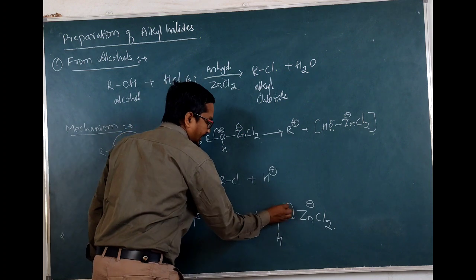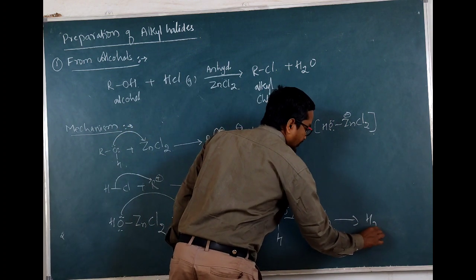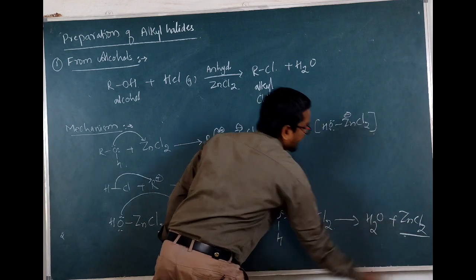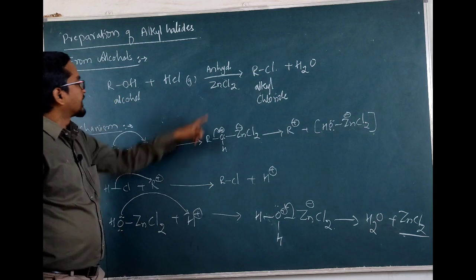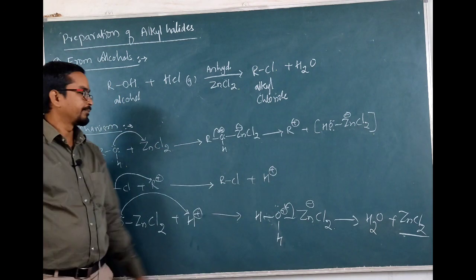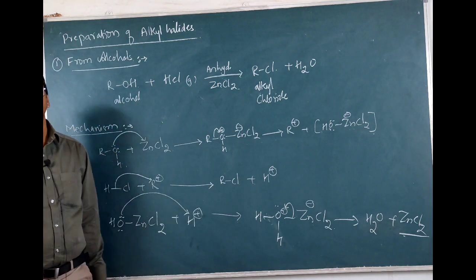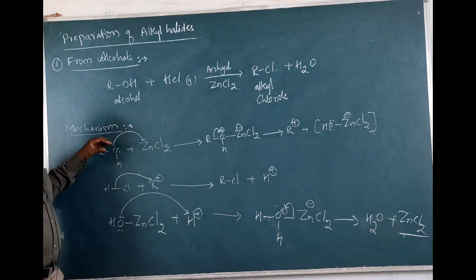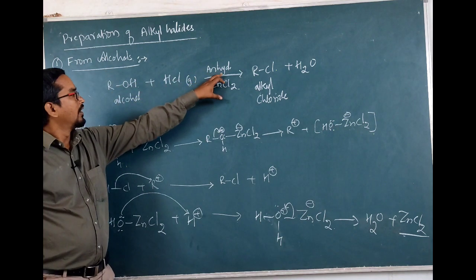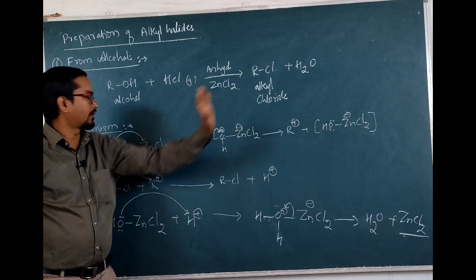Oxygen will take the electrons, and hence in this way it will lead to the formation of H2O plus ZnCl2. So we can say that ZnCl2 is acting as a catalyst — ZnCl2 will not appear in the product — and water as well as the alkyl chloride is formed by using this method.